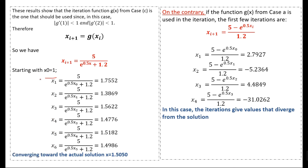Starting with x₀ = 1, we compute the first iteration, second iteration, and so on. After 6 iterations we get approximately 1.4989, which is converging toward the actual solution of 1.5050. This confirms that Case C produces a convergent iteration.